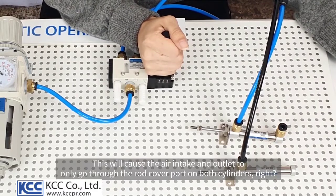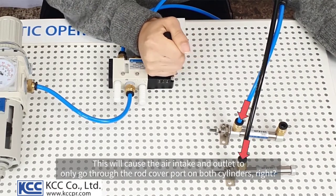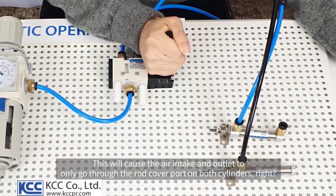This will cause the air intake and outlet to only go through the rod cover port on both cylinders, right?